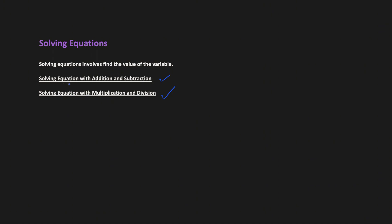Before we jump into some examples, I wanted to highlight that when you see a problem which says 'solve an equation,' it usually involves finding the value of the unknown variable. It could be x, y, a, b, or any other variable given in the question. Let's look at the first type: solving an equation with addition and subtraction, and go over a couple of examples.